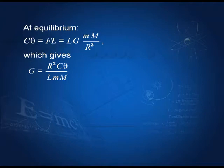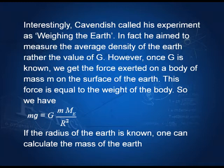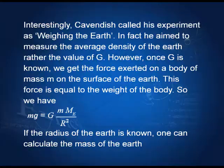From this we can get G, which equals R²·C·θ divided by L·m·M, where L is the length of the beam, m is the mass of the small sphere, and M is the mass of the big sphere. All these quantities are known, therefore G can be determined. Since the deflection is small, we usually use a light beam arrangement to measure it. Interestingly, Cavendish did not perform this experiment to determine G — his aim was to determine the weight of the earth. From the equation Mg = this expression, if the radius of the earth is known, one can calculate the mass of the earth, since G, small m, and capital R are all known.